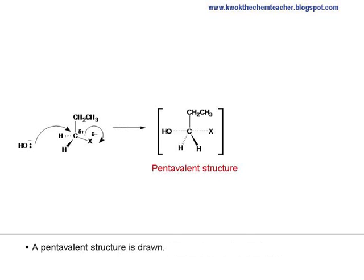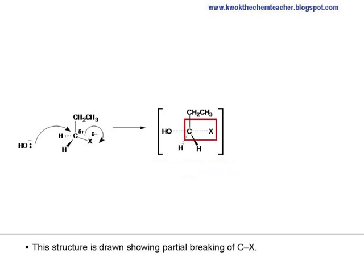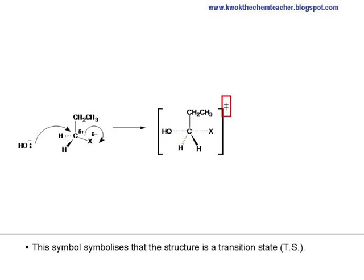A pentavalent structure is drawn. This structure is drawn showing partial breaking of the C-X bond and the partial formation of the C-oxygen bond. This symbol symbolizes that the structure is a transition state.